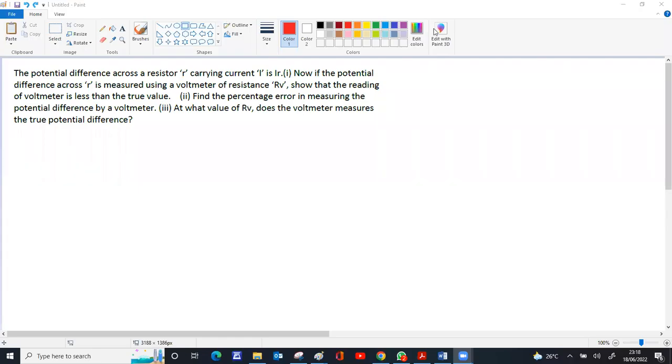The potential difference across resistor r carrying current i is v equals i times r.